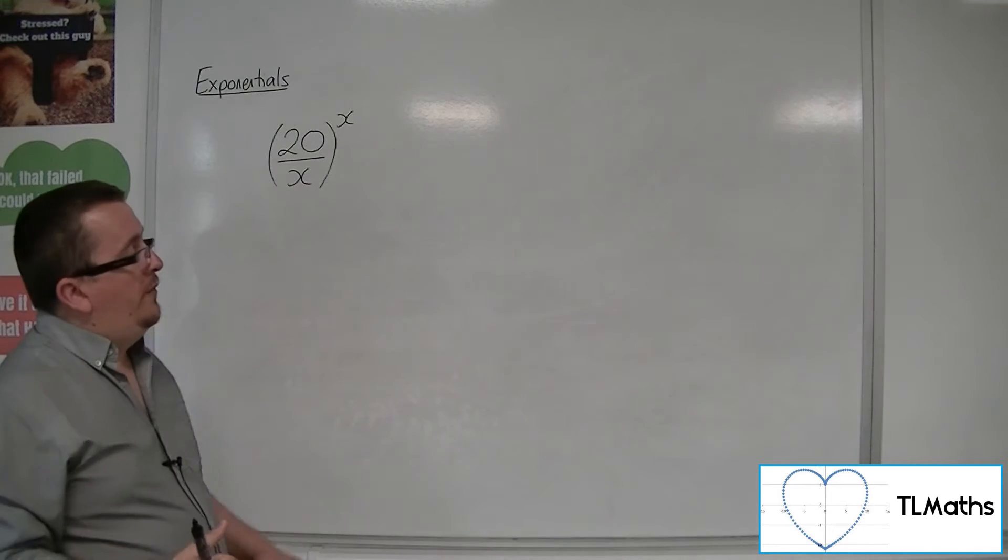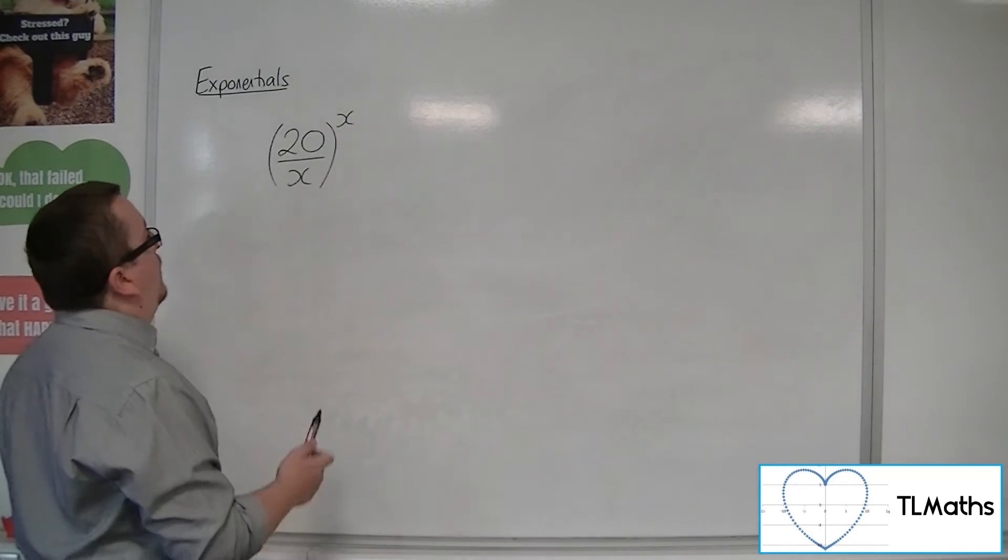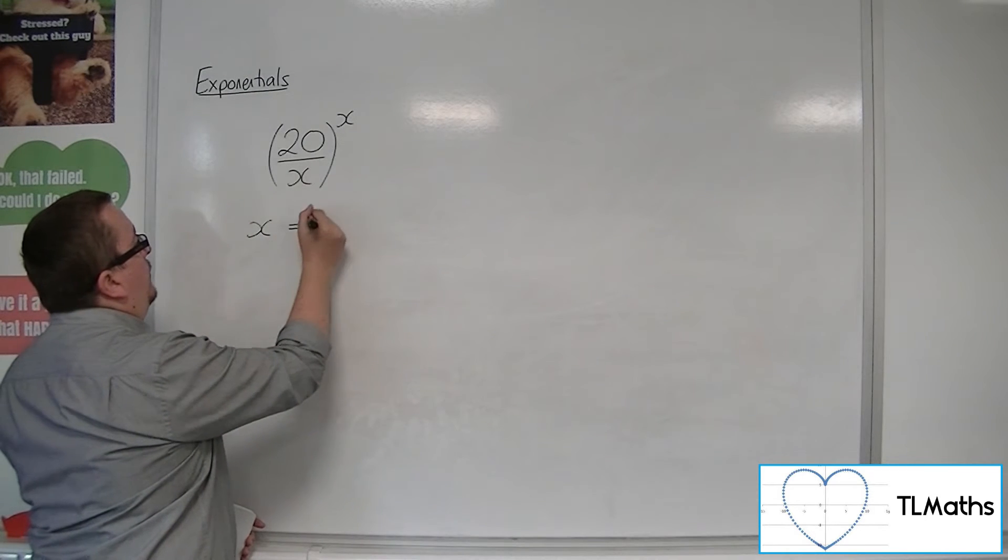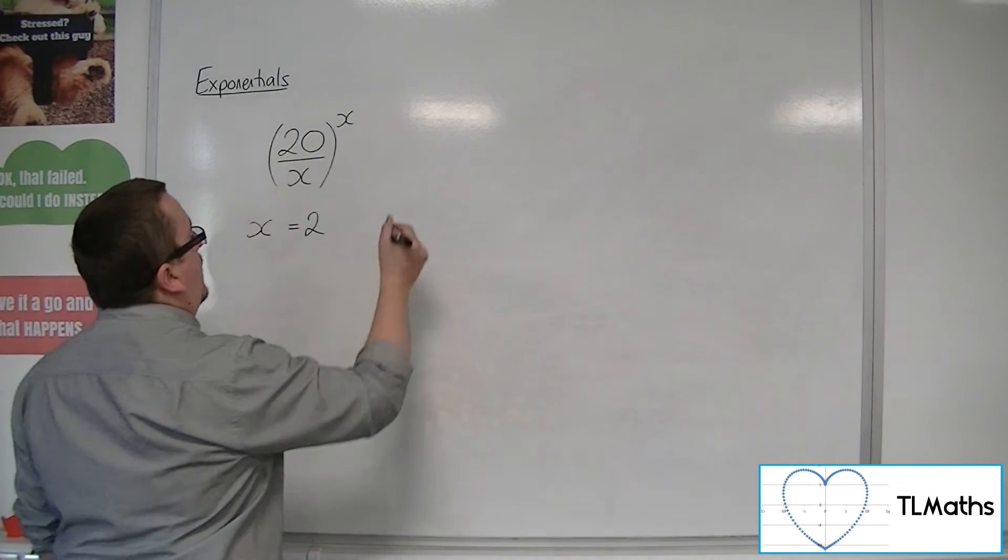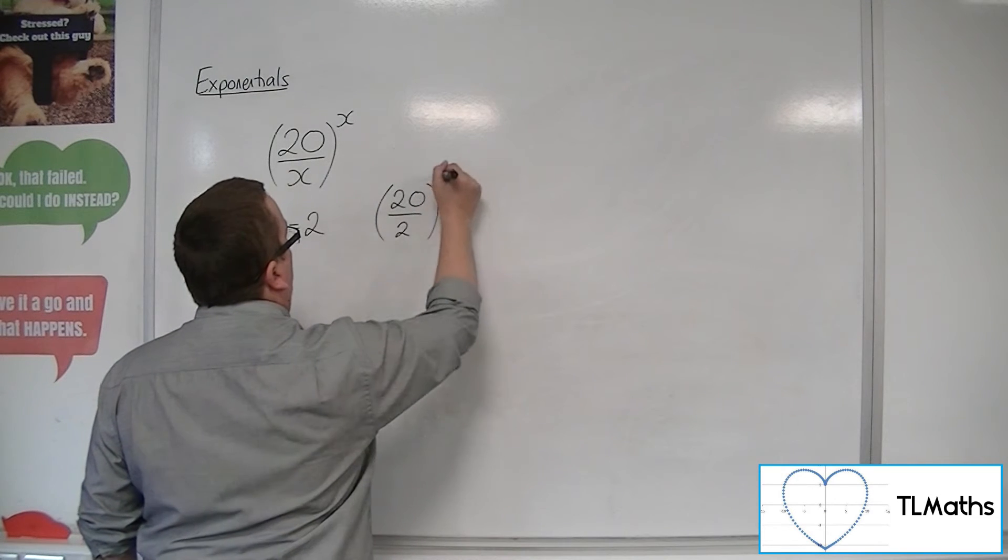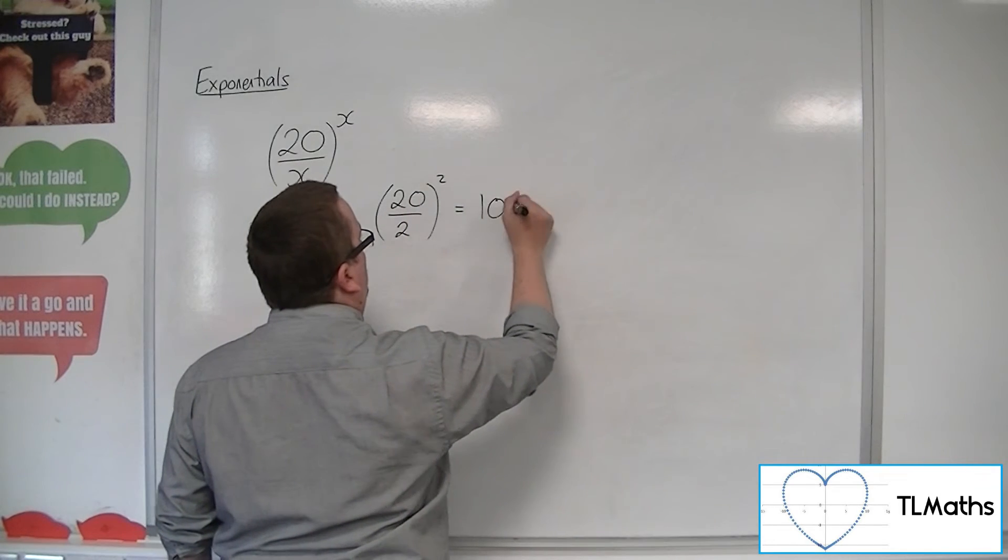So I'm going to start you off in the way that you might go about this. So you might think, well, how about if x is equal to 2? Then we're going to have 20 over 2 squared. So that would be 10 squared, which is 100.